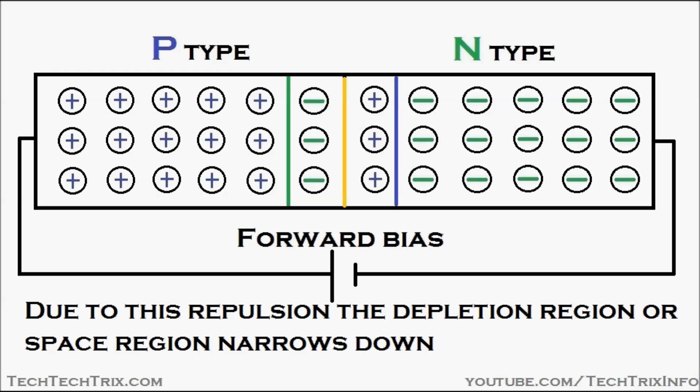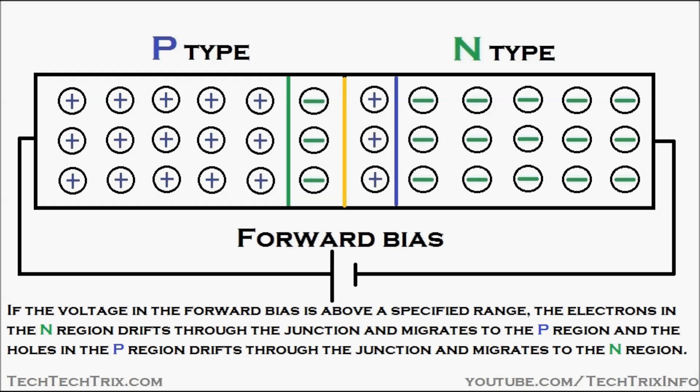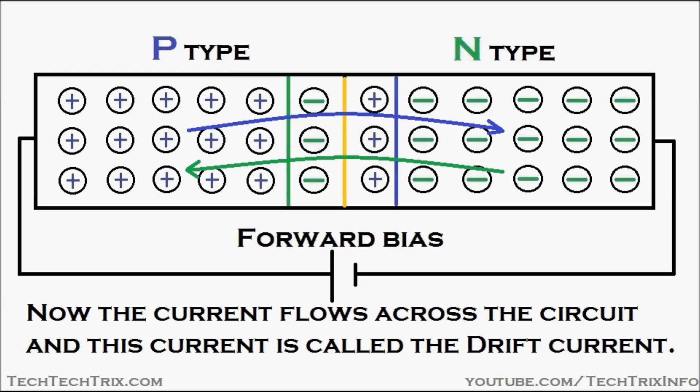Due to this repulsion, the depletion region or space charge region narrows down, as seen in the animation. If the voltage in the forward bias is above a specified range, the electrons in the N region drift through the junction and migrate to the P region, and the holes in the P region drift through the junction towards the N region. Current starts to flow across the circuit, and this current is called drift current.